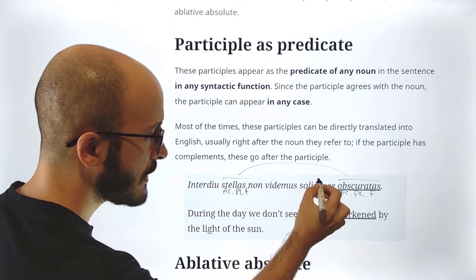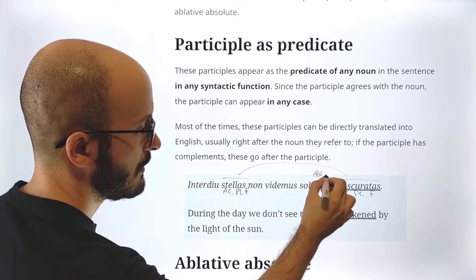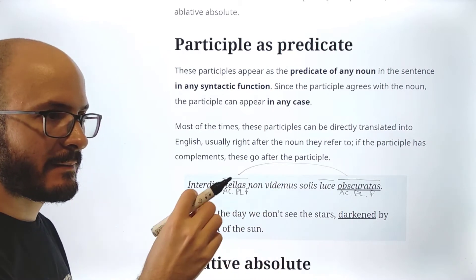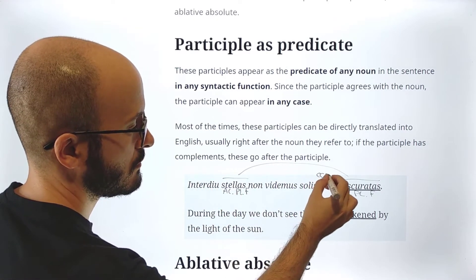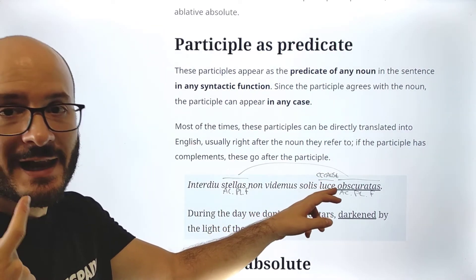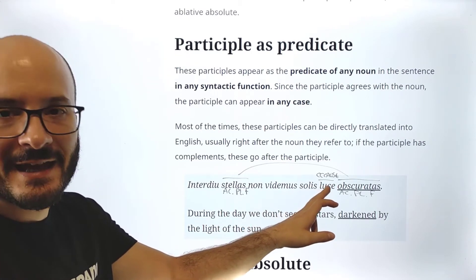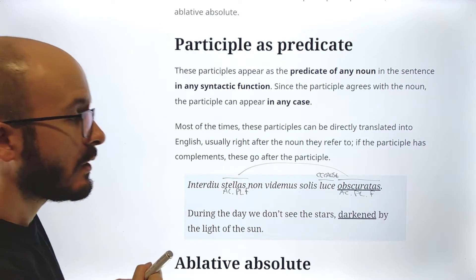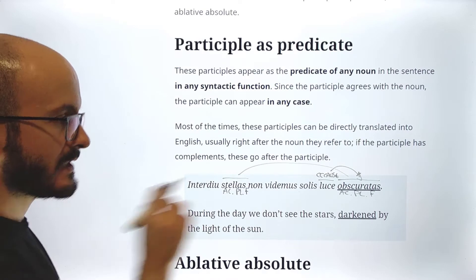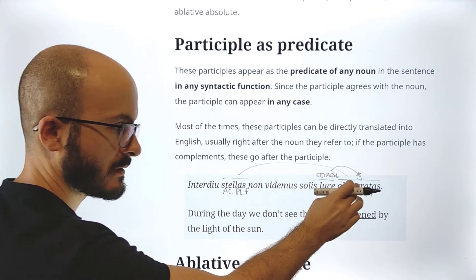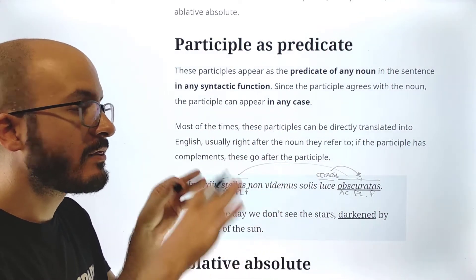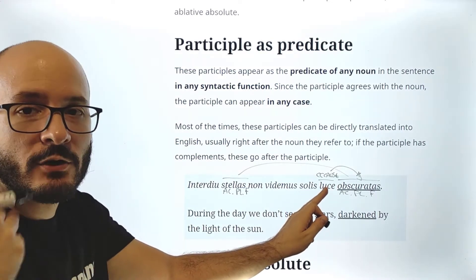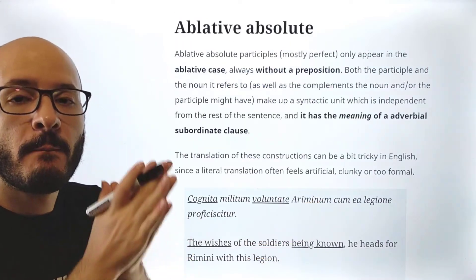Here we also see 'luce' is an ablative, which as we said in the passive voice, rather than an agent it would be the cause, because light is not a person, so it is weird to say it is an agent — it is the cause, the cause why the stars are darkened. This is the cause of the participle, not the cause of the main verb. So as we said, participles can have their own complements. And because this is a passive participle, it can have even the typical complements of the passive voice. That is the participle as predicate.